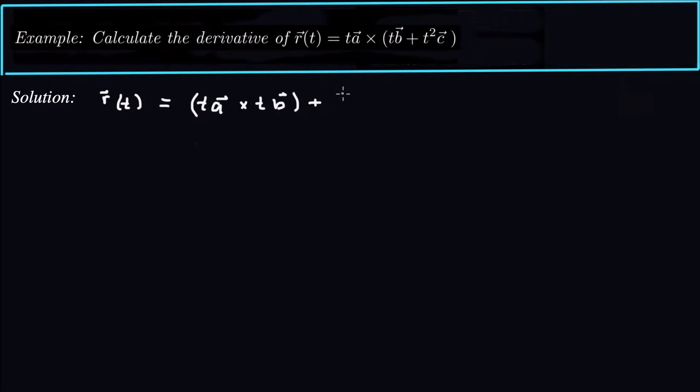So this becomes t a cross t b plus, in parentheses, t a cross t squared c.